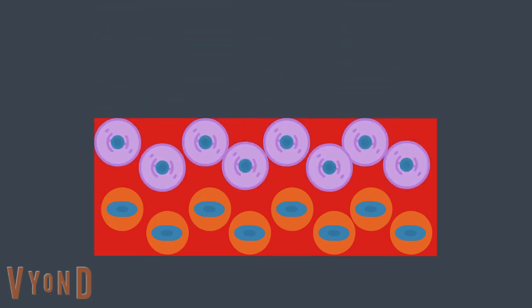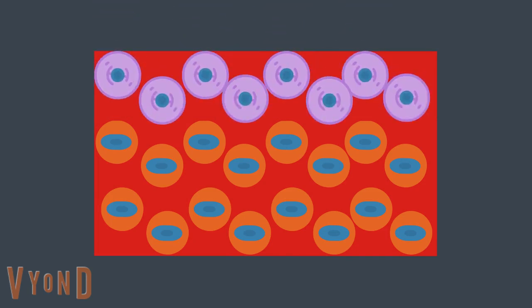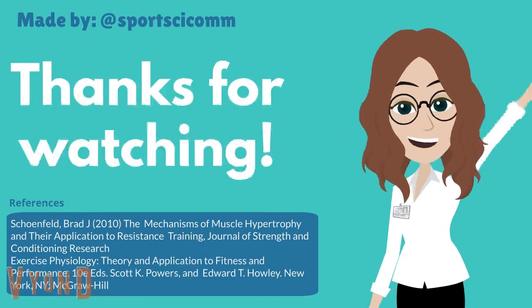As the size of the muscle fiber increases, more myonuclei are required to support protein synthesis over the larger area. However, adult muscle stem cells are unable to divide and generate more myonuclei themselves. Therefore, satellite cells are required to do so, thus supporting the increased size and continued growth of the muscle fibers.